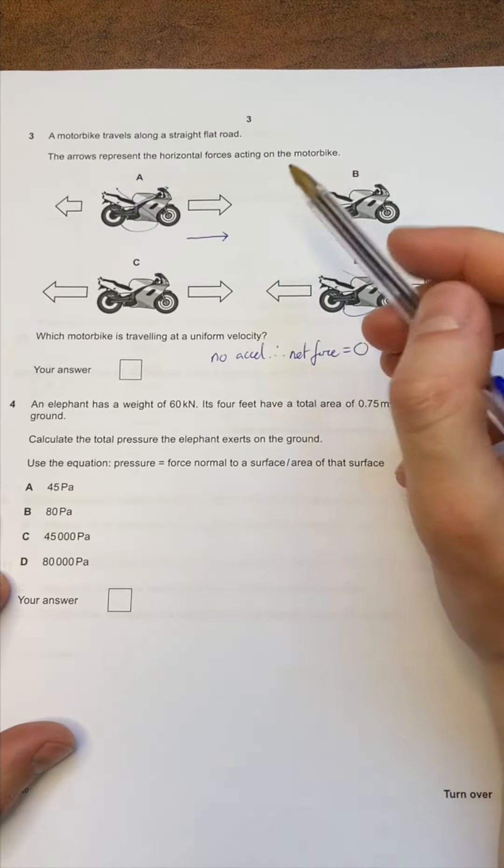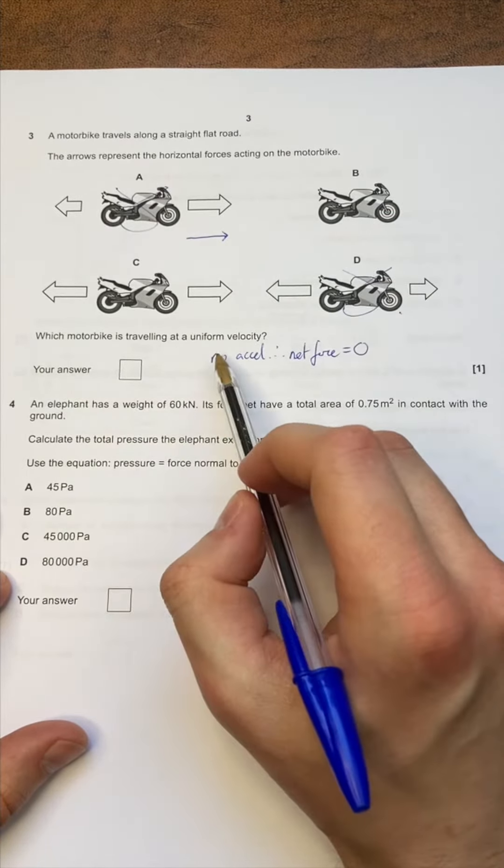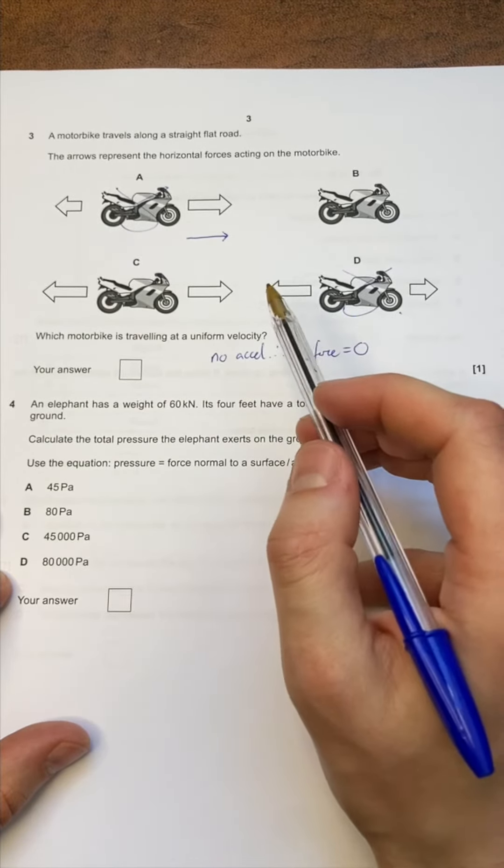The trick to determining which of these is the correct one is to realise that if our motorbike is travelling at a uniform velocity, it's probably travelling against air resistance, friction of the road.